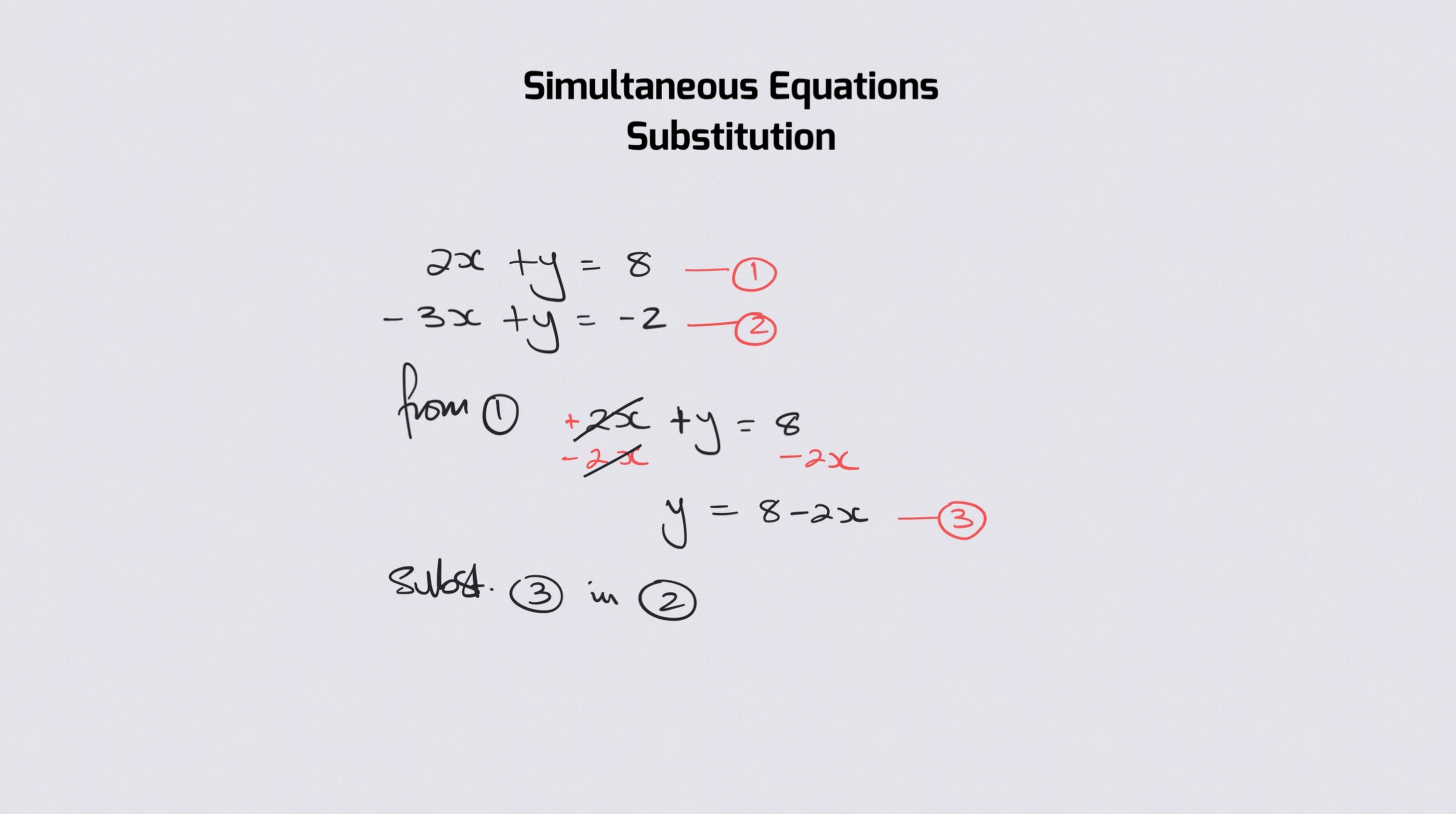So where there is y, I can replace that y for 8 minus 2x because I know that y is equal to 8 minus 2x. So just replace that. So once we replace that it means that now we've got minus 3x plus 8 minus 2x is equal to minus 2.